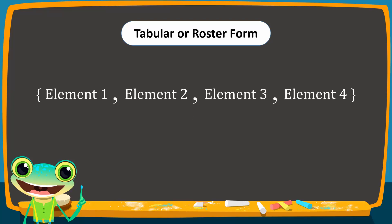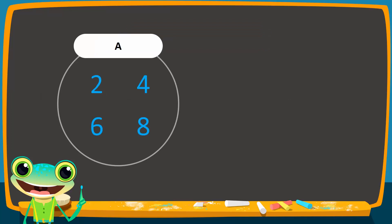So, set A in tabular notation is equal to open brace, 2, comma, 4, comma, 6, comma, 8, and close brace.